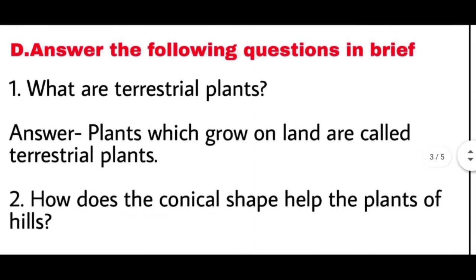Now let us discuss the question answers. First: what are terrestrial plants? Terrestrial plants kise kehte hain? The answer is: plants which grow on land are called terrestrial plants. Zameen pe ugne waale paudhon ko terrestrial plants kehte hain.